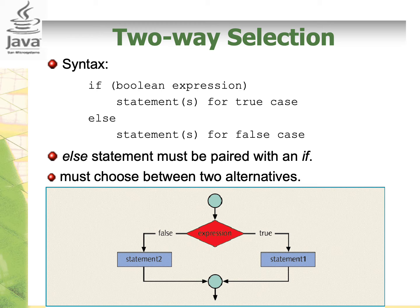The syntax is: if (boolean expression), then the statements for the true case — the boolean expression in the if is normally true. Else, we have statements for the false case. The else statement must be paired with an if, so we need to have an if before we can have an else. In if-else, we must choose between the two alternatives.